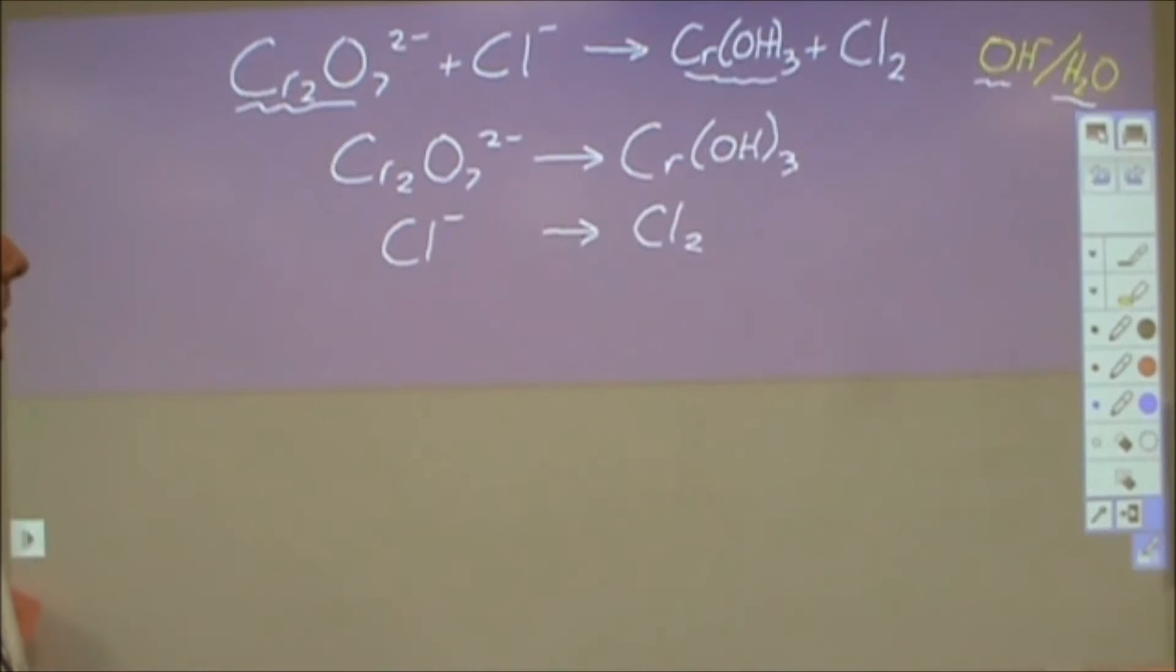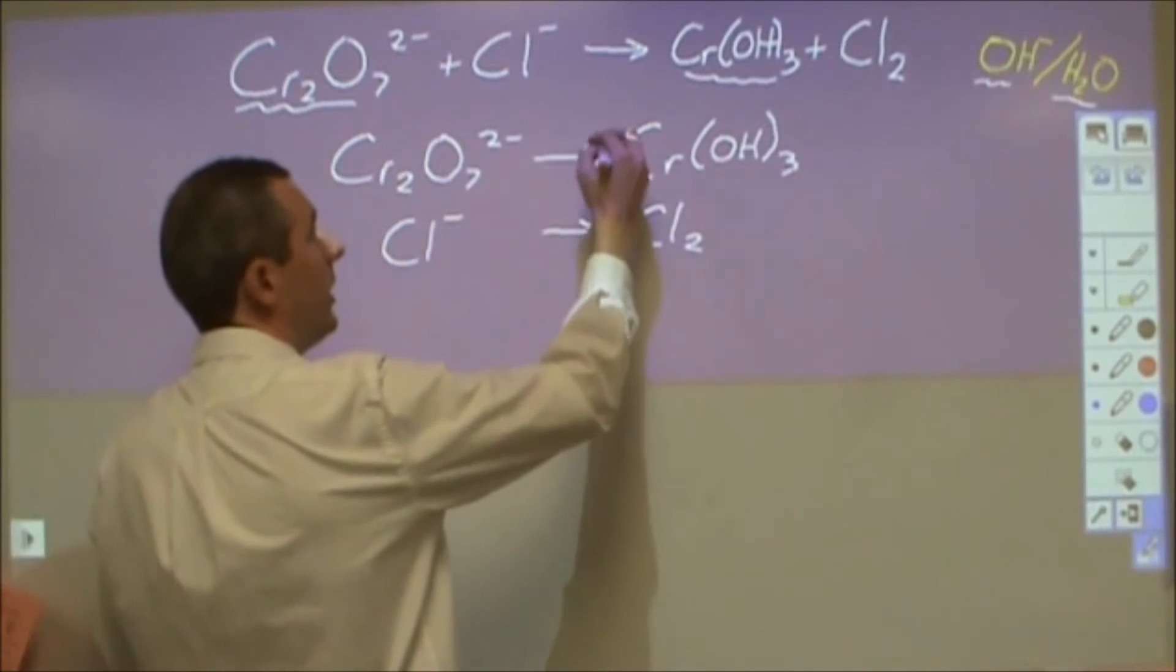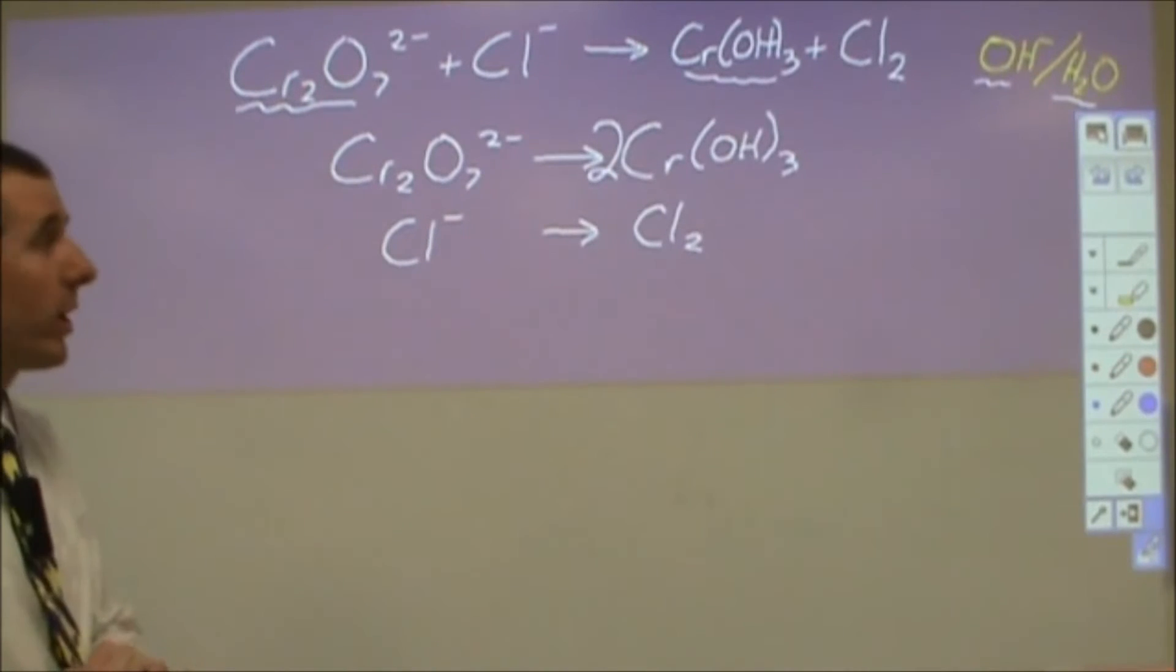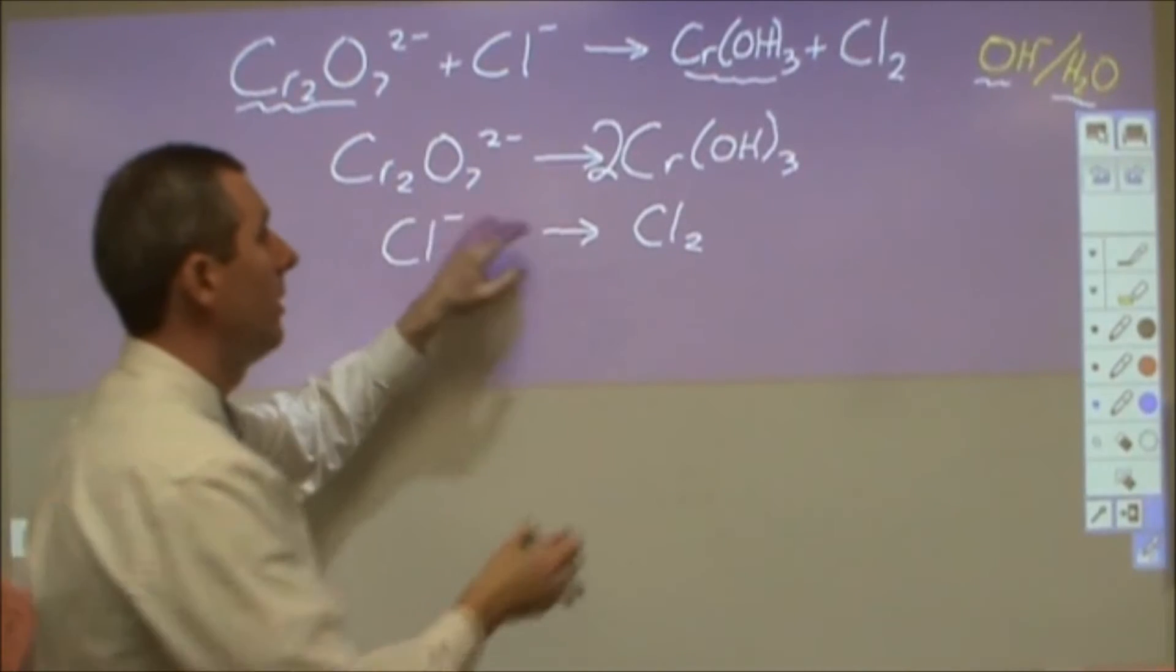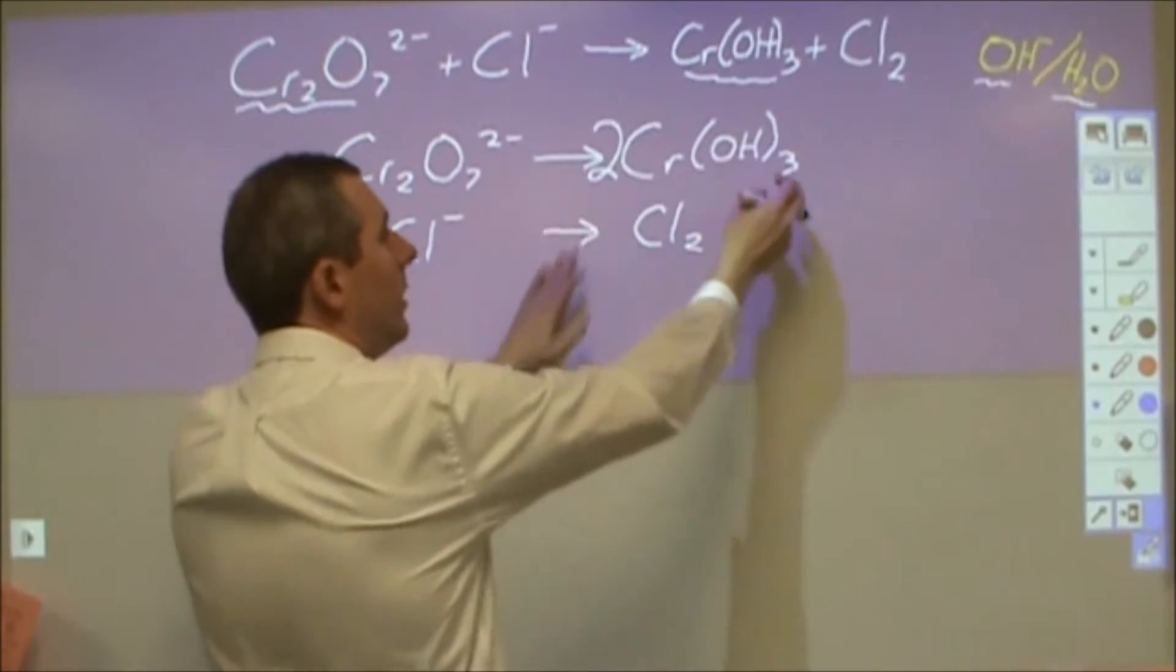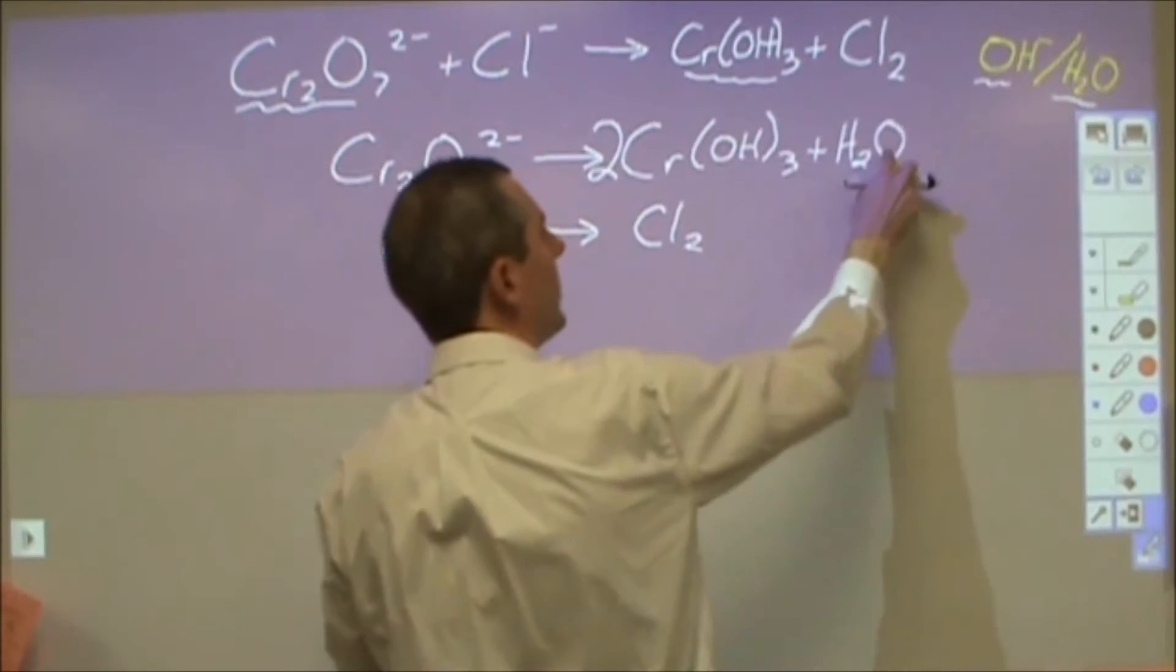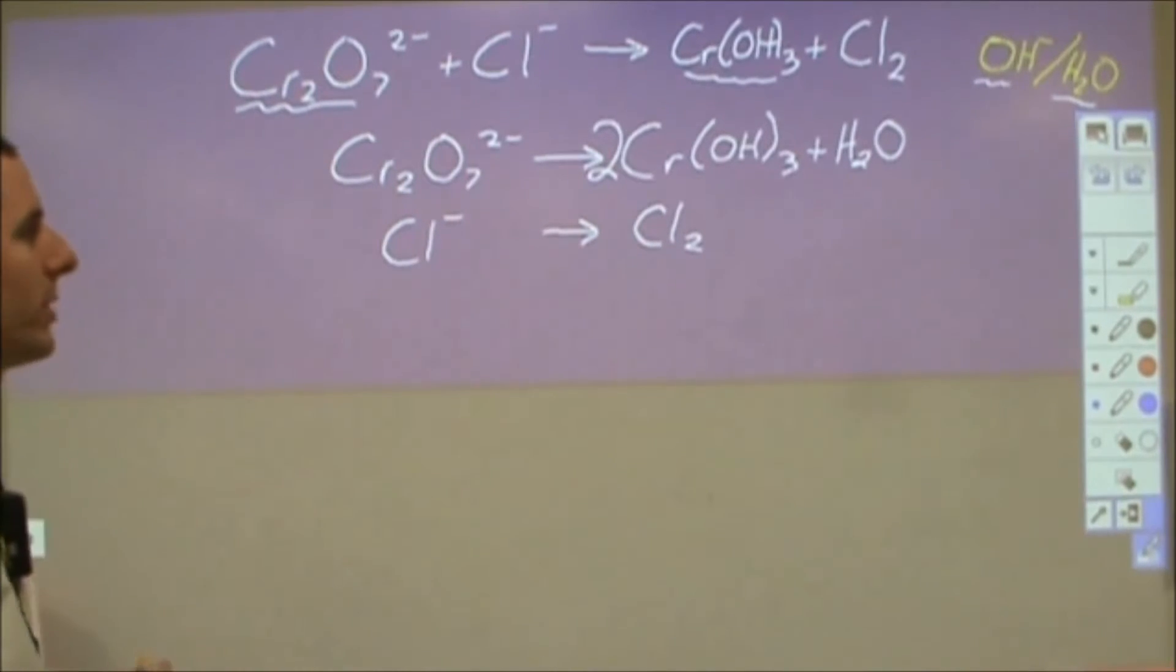First thing you want to do is balance anything that's not hydrogen or oxygen. Usually there's only one or two things. Chromium, I have two here, I only have one here. That's a problem. I'm going to put a two there. After that you're going to balance your oxygens. So I have seven oxygens here and I have six here. So I need another oxygen and to do that I'm going to get a water molecule and put it there for my seven oxygens on both sides.